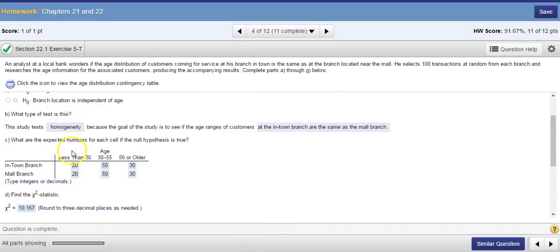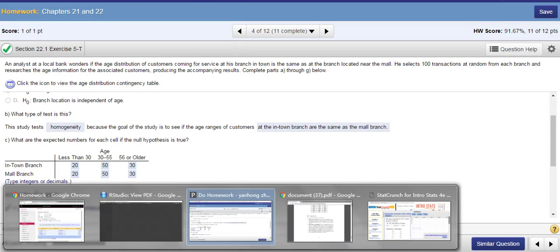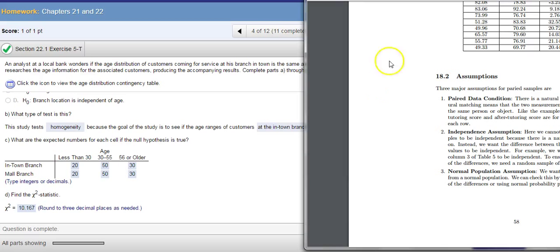What are the expected numbers for each cell if the null hypothesis is true? Sometimes you might wonder why does this question even bother asking this since we can do the chi-square test in StatCrunch. But sometimes if you don't have StatCrunch available, you need to do them by hand. Then there will be a formula you need to use. Let me bring up my formula for you.